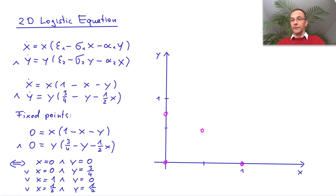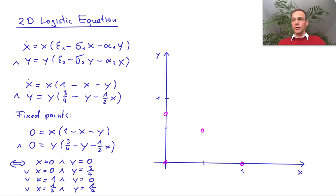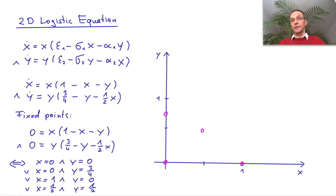We know if the dynamics is at one of these four points, it will not move. Now the next thing that is of interest are the nullclines. The nullclines are defined by one derivative being zero. The fixed points are defined by both derivatives being zero, while the nullclines are defined by only one derivative being zero.